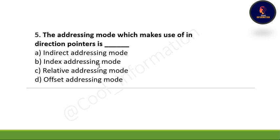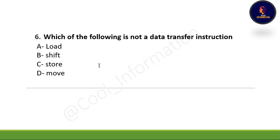Fifth question: The addressing mode which makes use of indirection pointers is — option A, indirect addressing mode; option B, index addressing mode; option C, relative addressing mode; option D, offset addressing mode. The correct option is option A, which is indirect addressing mode.